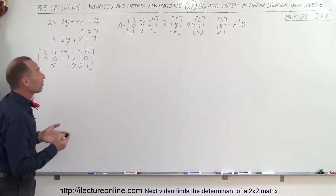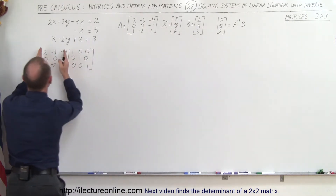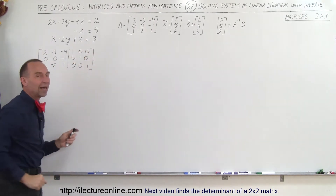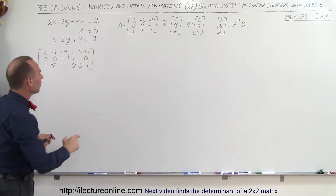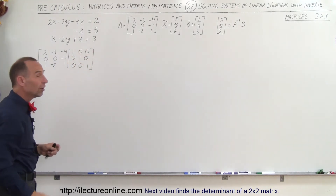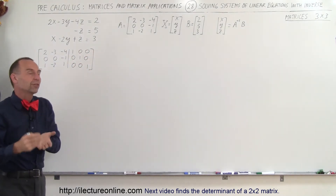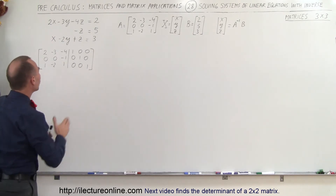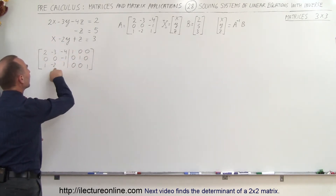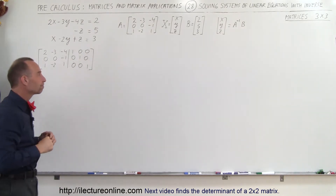So now we have to find the inverse of matrix A. We take matrix A and write it into an augmented matrix, where on the right side we have the identity matrix with ones across the diagonal and zeros everywhere else. We're now going to manipulate it using the Gauss-Jordan method of elimination to turn the left side into the identity matrix, so that the right side will then show us what the inverse of matrix A is.